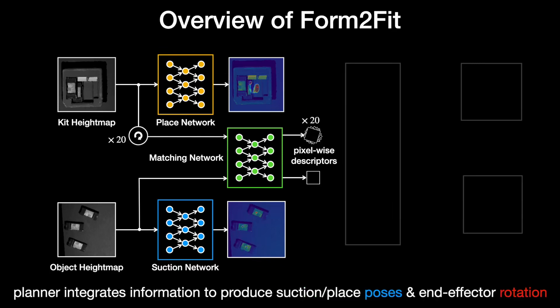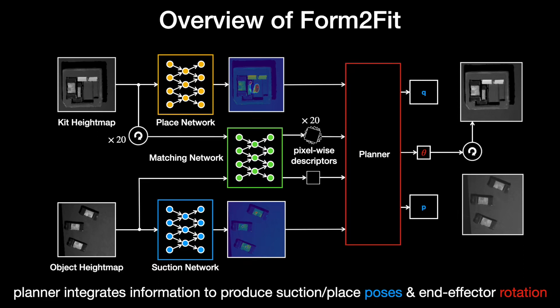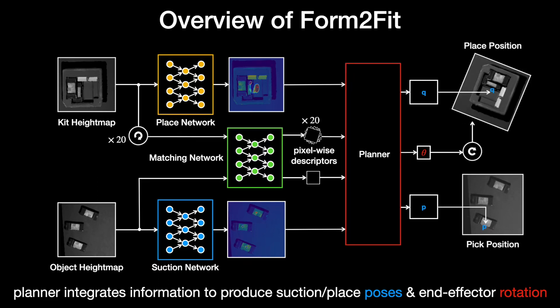Finally, the planner is responsible for integrating information from all three modules and producing the final assembly parameters. Specifically, top pick candidates are sampled from the suction heat map, and top place candidates are sampled across all 20 rotations of the place heat map. Then, for each pick and place pair in the product of candidates, kit and object descriptors are indexed and their L2 distance is evaluated, after which the pair with the lowest L2 distance across all rotations and all candidates is chosen to produce the final kit descriptor, object descriptor, and rotation index.